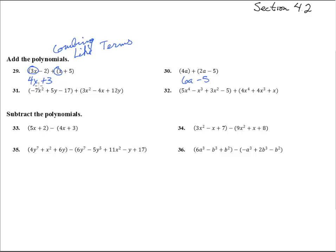Number 31, here we have an x squared and an x squared, so negative 7x squared plus 3x squared — that's negative 4x squared. We have a 5y and a 12y, so that gives us 17y. There's the 17; negative 17 is over there, and this guy's by himself: negative 4x. Normally descending order is pretty standard.